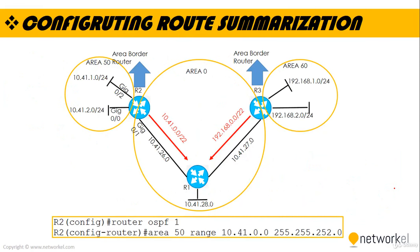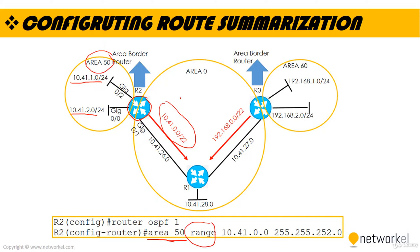To configure route summarization on an ABR, we use the 'area range' command. For example, on Router 2, to summarize two networks into the single network 10.41.0.0/22, we type 'area 50 range 10.41.0.0 255.255.252.0'. This command performs the summarization for us.